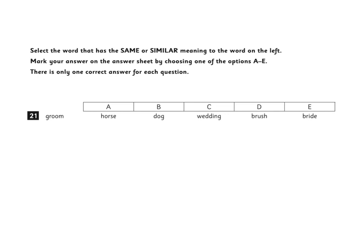21. Groom. The word groom can be used as a noun. We might, for example, talk about the bride and groom. But this word can also be a verb. To groom an animal, such as a horse, means that you use a special brush and you brush their fur.